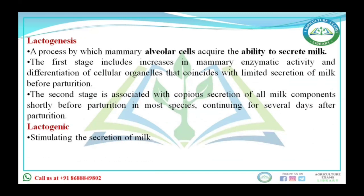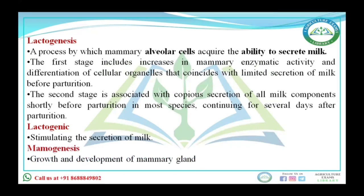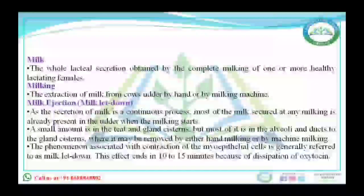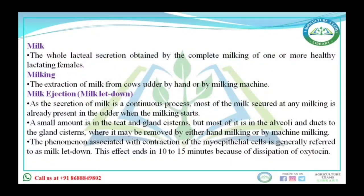Mammogenesis refers to the growth and development of the mammary gland. Milk is defined as the whole mammary secretion obtained by complete milking of one or more healthy lactating animals. Milking is the extraction of milk from the cow either by hand or machine.